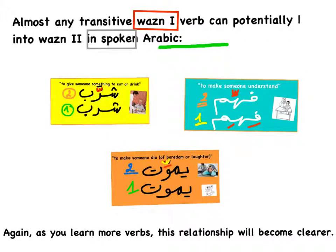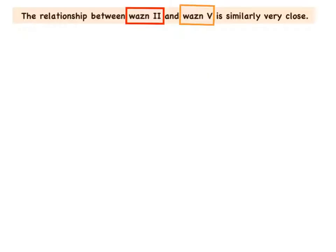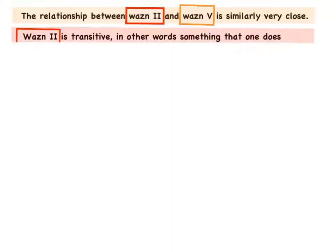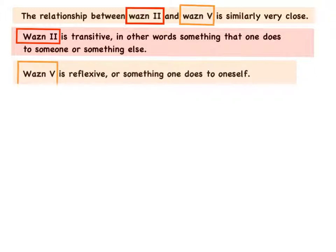As you learn more verbs, the relationship will become clearer — so hang in there. The relationship between wazn 2 and wazn 5 is very close. Wazn 2 is transitive — in other words, something that one does to someone or something else — whereas wazn 5 is reflexive, something one does to oneself. Wazn 2 requires another subject, whereas in wazn 5 the other subject can be oneself.